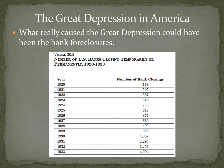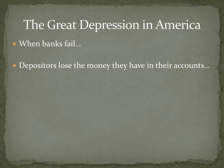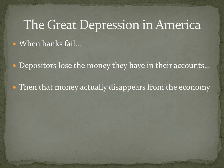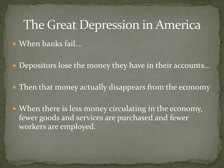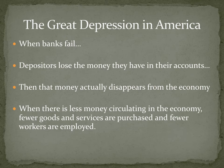When banks fail, depositors lose everything in their accounts — it disappears from the economy. It's not real cash actually sitting in the bank somewhere; it's figurative. Banks take your money and invest it to make money off of it, so your money physically isn't there. When the bank closes and says it's gone, it's actually gone — it disappears. It's a magic trick. So there's less money circulating in the economy, and when there's less money, fewer goods and services are purchased and fewer workers are employed — like that reverse multiplier effect.